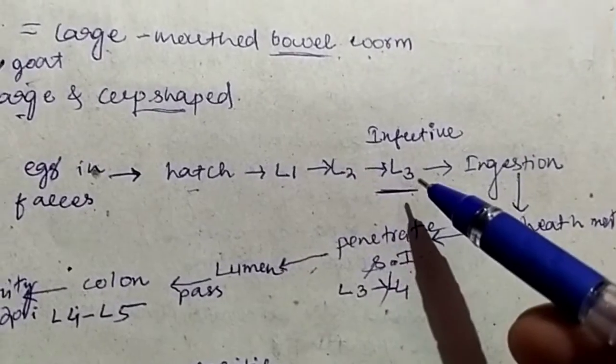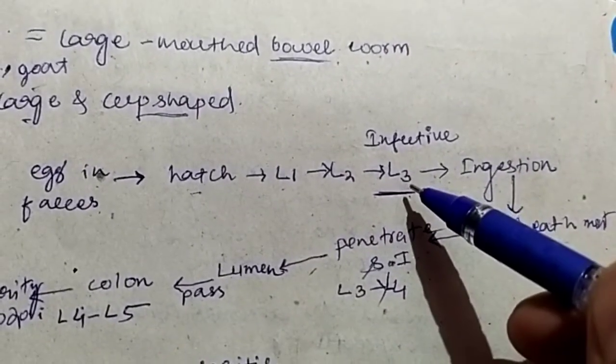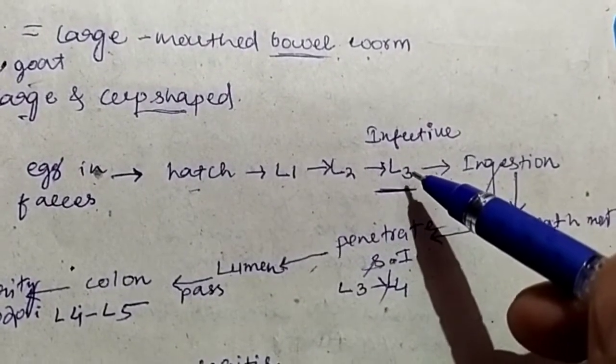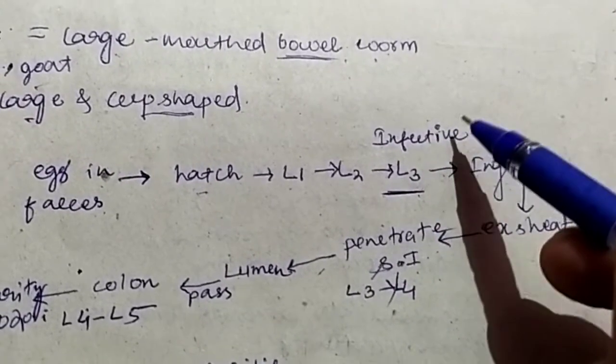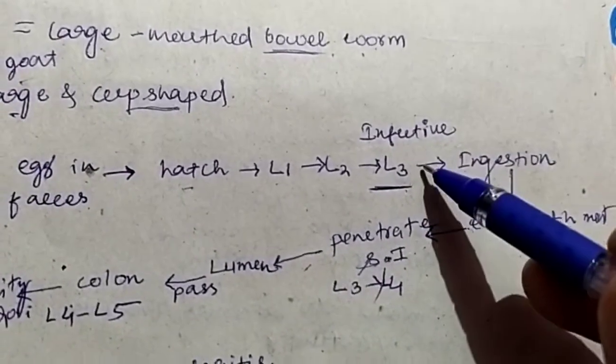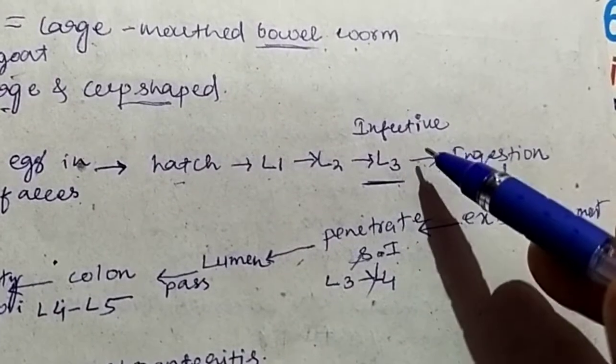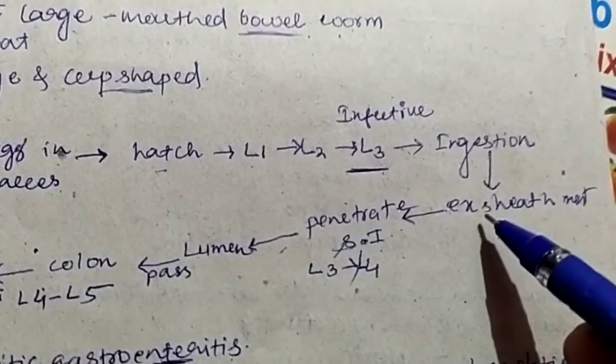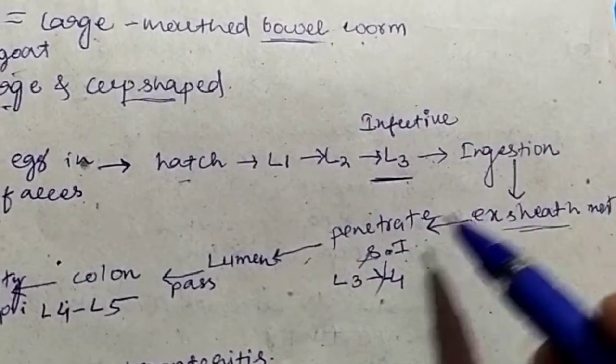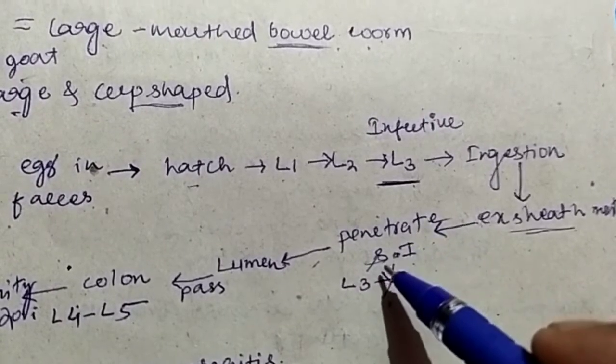In the last several videos, we discussed that in general nematodes, L3 is the infective stage except the ascarids. Now after ingestion of this L3 infective stage larva, then its excheathment will happen. After this, it will penetrate the small intestine.